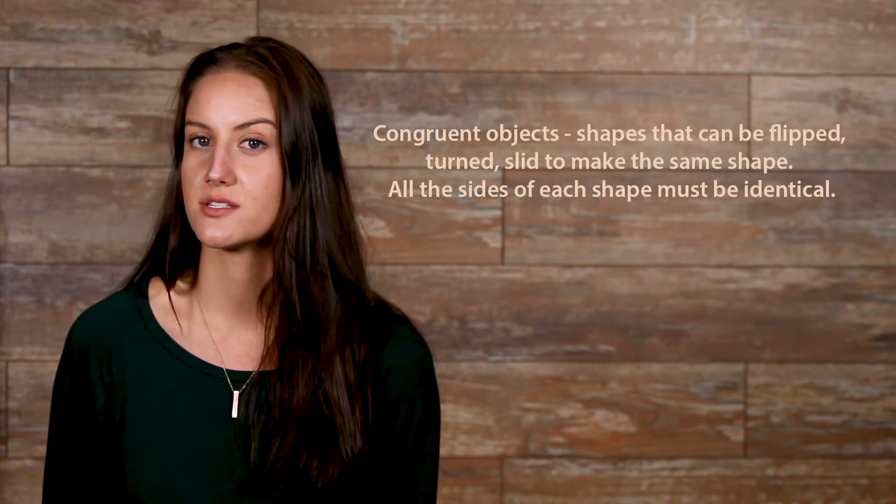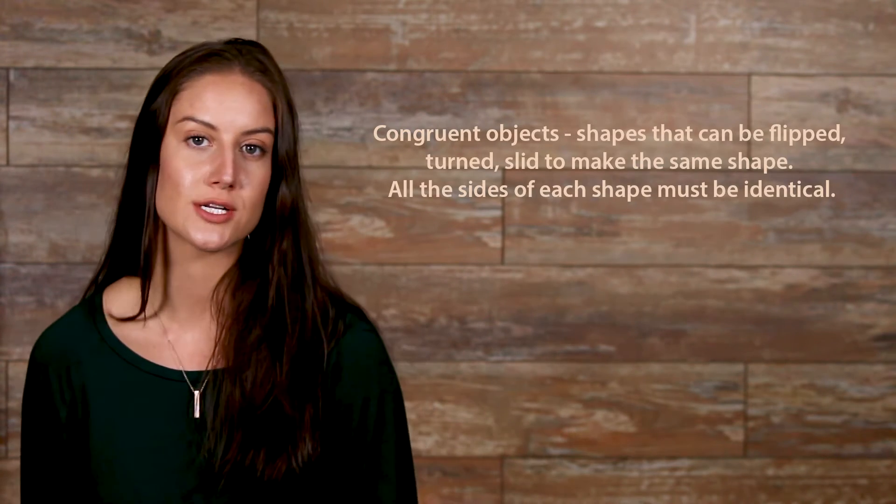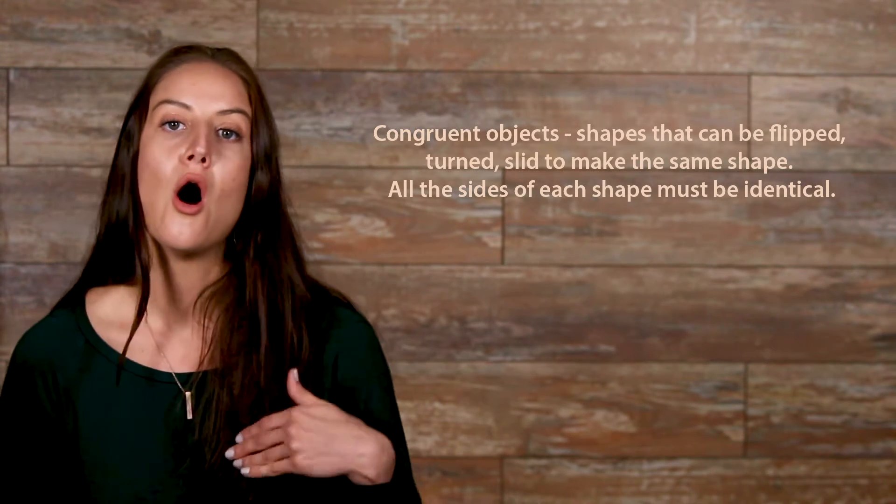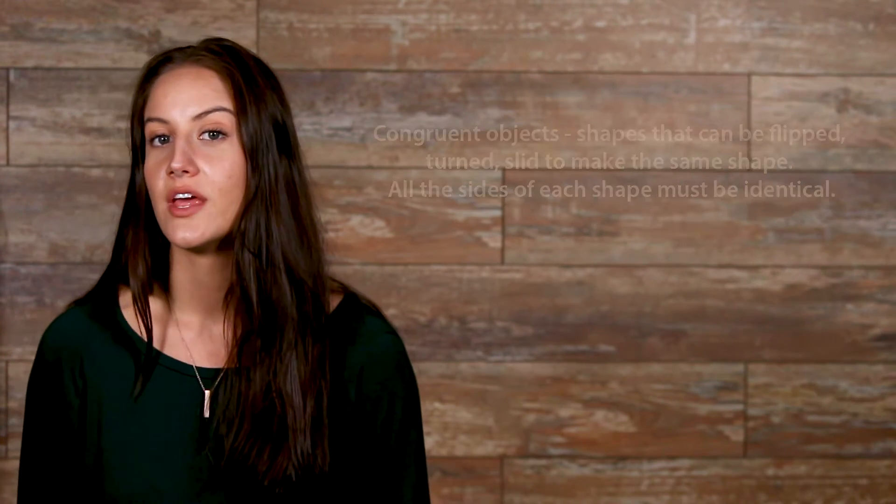This is what we call congruent objects, shapes that can be flipped, turned, slid to make the same shape. All the sides of each shape must be identical. There are a few different ways you can move congruent objects.